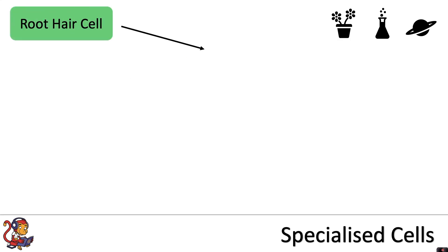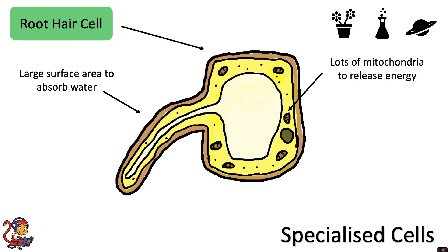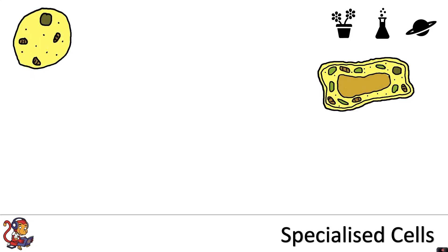The root of the plant contains another specialised cell called the root hair cell. This has a large surface area to absorb water, lots of mitochondria to release energy, and no chloroplasts as it's underground and doesn't do photosynthesis.